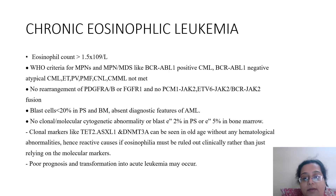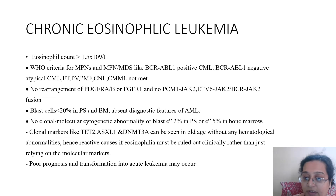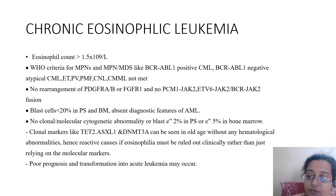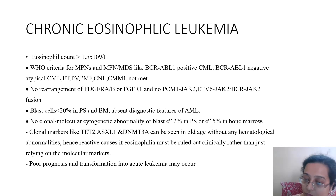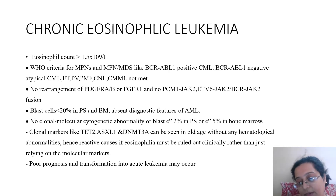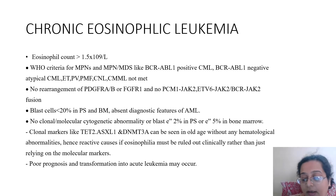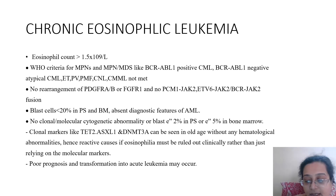Clonal markers like TET2, ASXL1, and DNMT3A can be seen in older age cases. This is important: these markers may be present in old-age patients with eosinophilia and no other mutation. You need to investigate thoroughly before labeling it CEL. Rule out secondary causes; if the main markers like PDGFRA are not positive and only TET2/ASXL1 are present, go slow with the diagnosis. CEL carries poor prognosis, and any MPN or MPN-MDS can transform to acute leukemia.